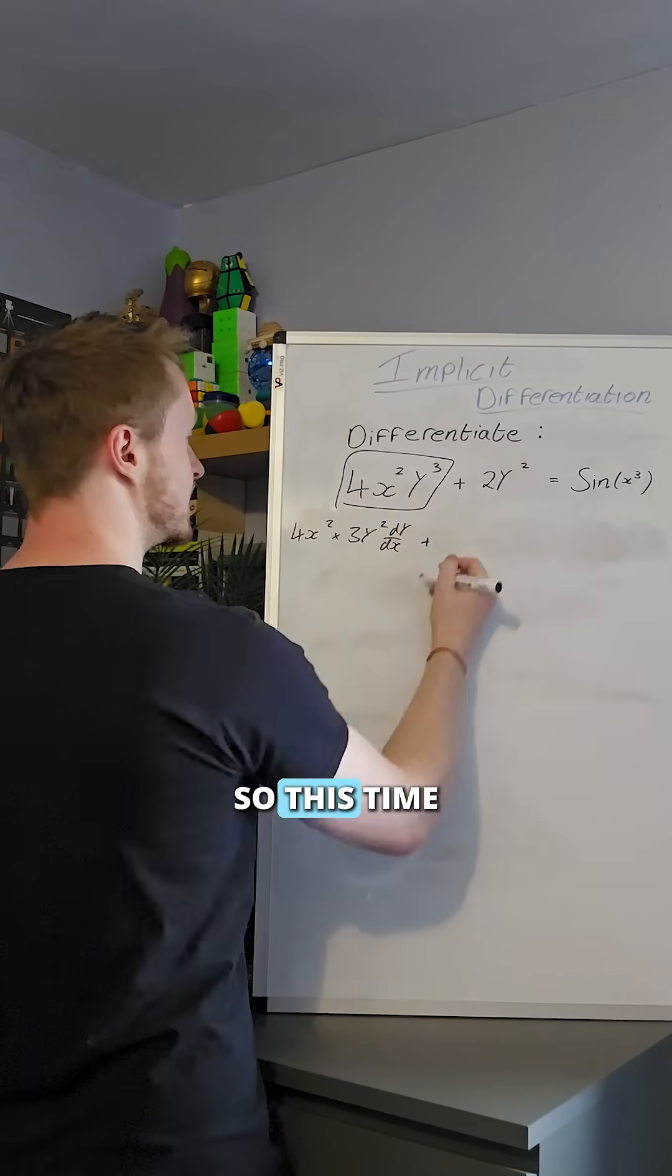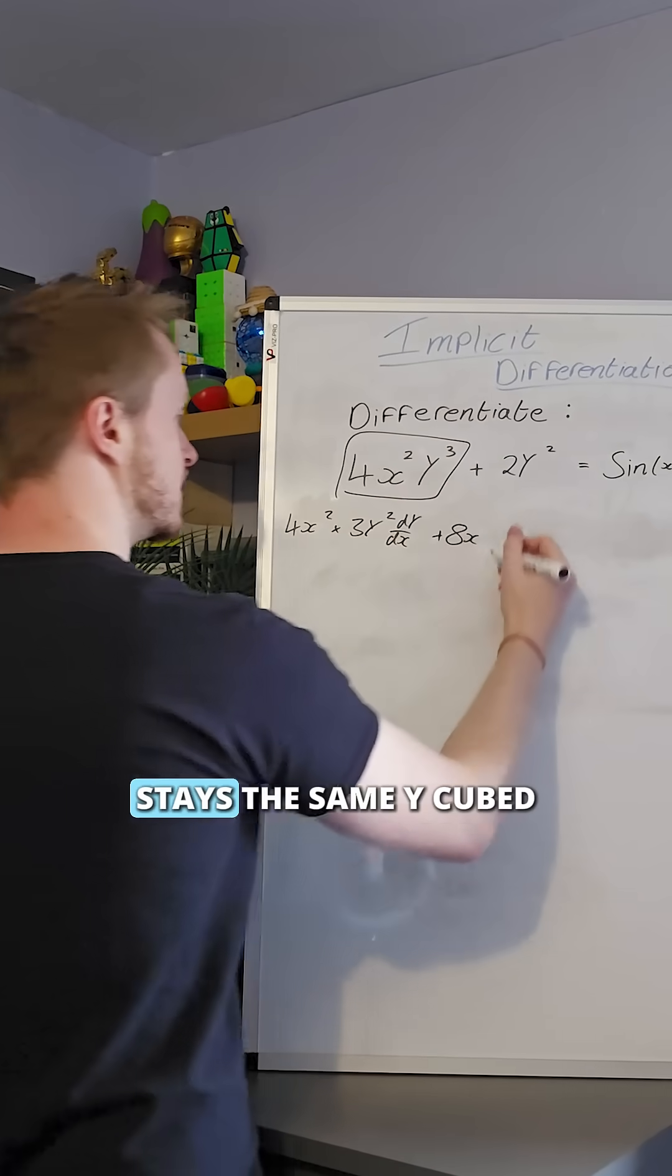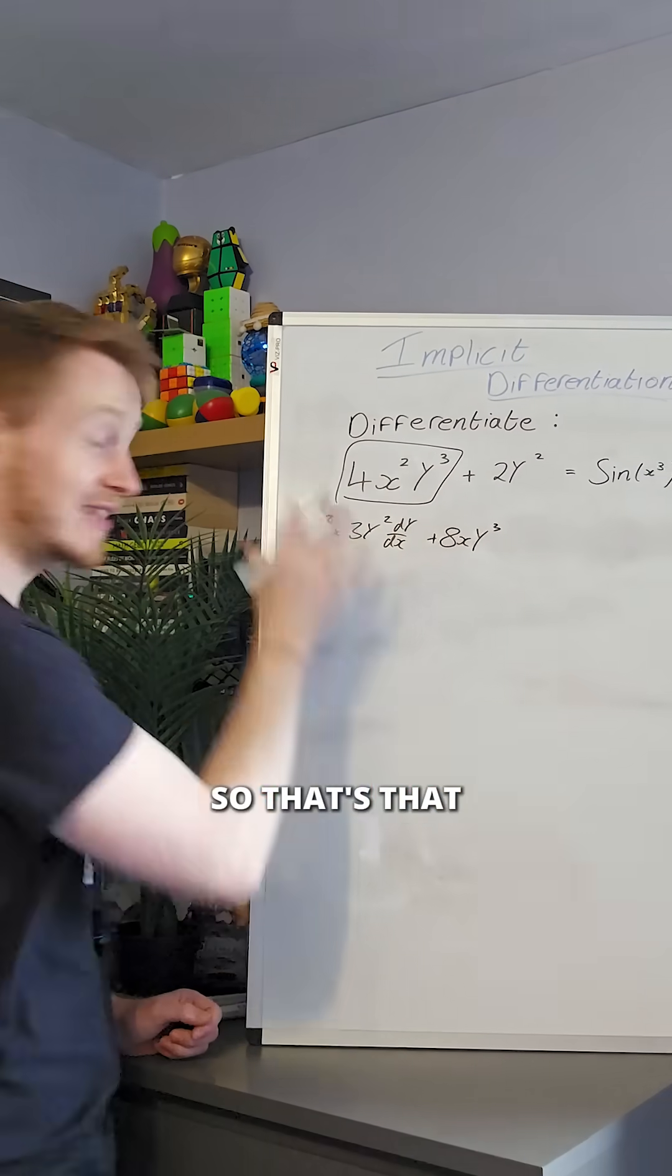Next one, we're going to do the opposite. So this time we're going to differentiate this one that's 8x and this one stays the same y cubed. So that's that bit done.